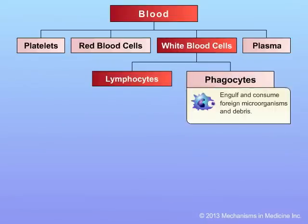Phagocytes are a major type of cell in the body responsible for immunity. These are responsible for the engulfment and consumption of foreign particles. The phagocytes can literally eat foreign bodies, including viruses.